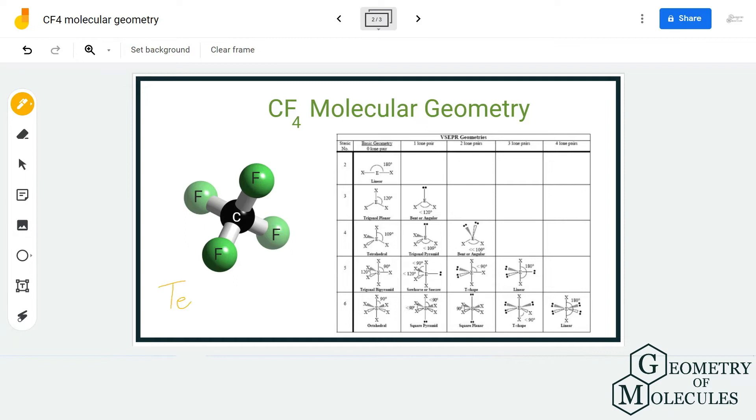If you look at its 3D structure, you can see that this is the central atom of carbon over here and it is forming bonds with four fluorine atoms. All these atoms are spread out evenly in the plane and hence it has a structure which is similar to tetrahedral structure.